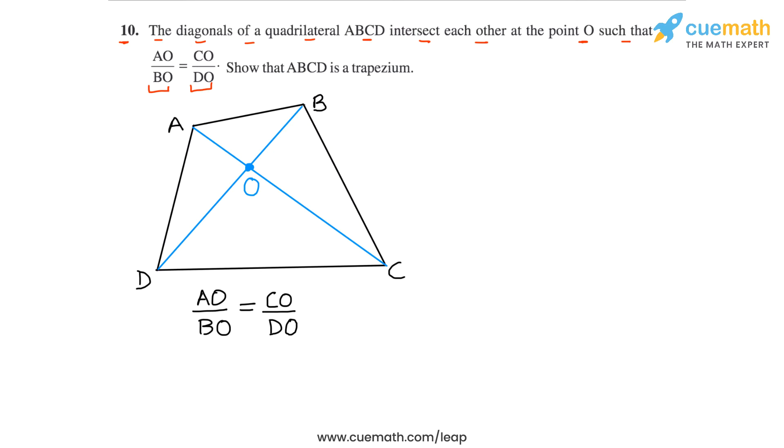Here's a figure that I've drawn for this information. ABCD is a quadrilateral in which the diagonals AC and BD intersect at O and we are told that the ratios AO by BO and CO by DO are equal.